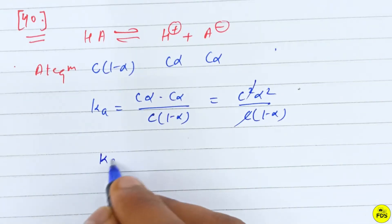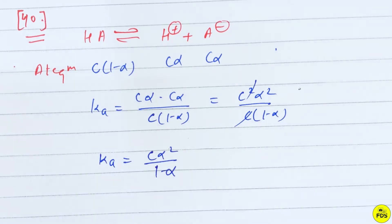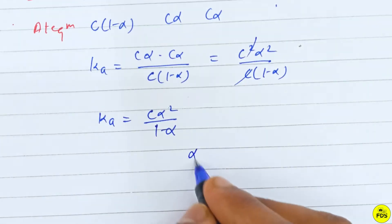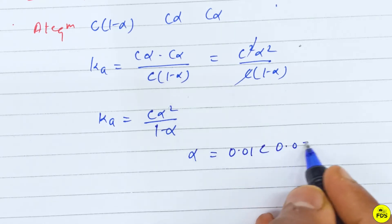So Ka value is C alpha squared upon 1 minus alpha, where alpha is 0.01.